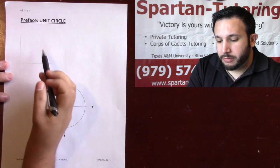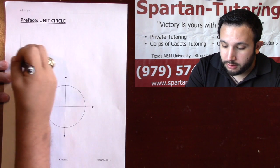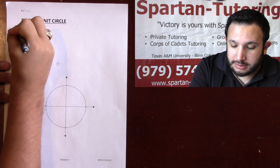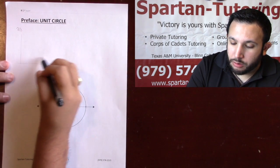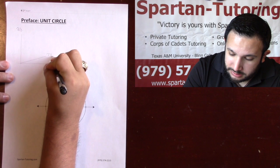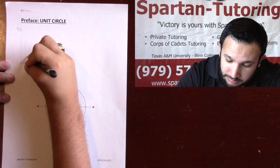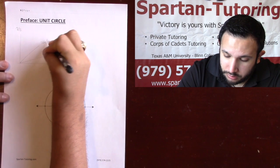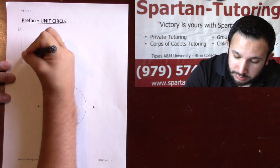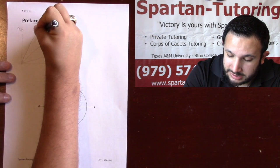The first thing I want to talk about is the first quadrant. Along the x-axis, this is going to be at zero degrees. Along the y-axis at the top, this is going to be pi over 2. We're going to have three angles in between: pi over 6, which is 30 degrees; pi over 4, which is 45 degrees; and pi over 3, which is 60 degrees.